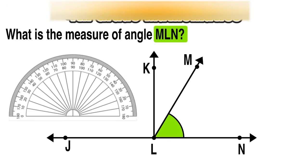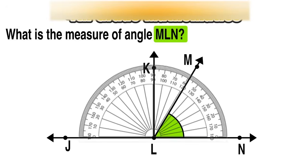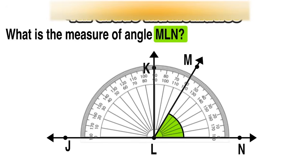Again, we align that center marker with the vertex point, and we also want the flat horizontal portion of the protractor perfectly aligned with the bottom line, our bottom ray that makes up our angle.